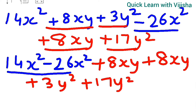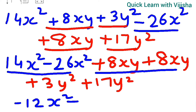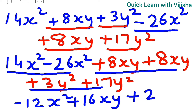Solving: 14 minus 26 gives minus 12, so minus 12x². Plus 8 plus 8 gives plus 16xy. Plus 3 plus 17 gives plus 20y². The answer is minus 12x² plus 16xy plus 20y².